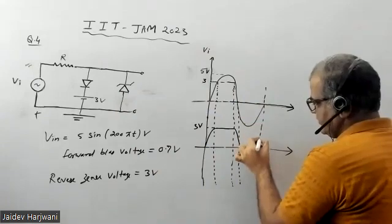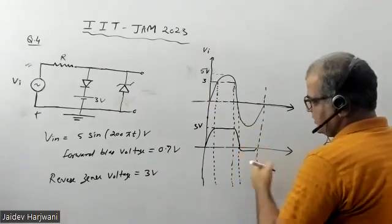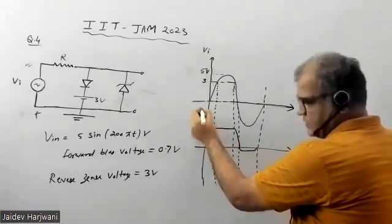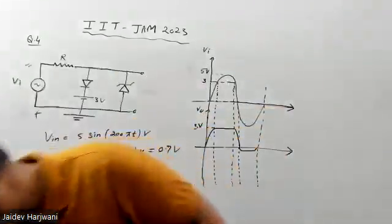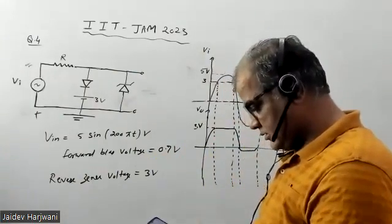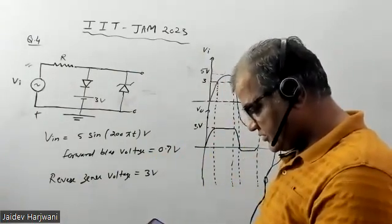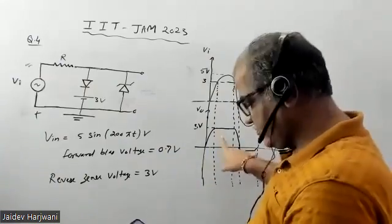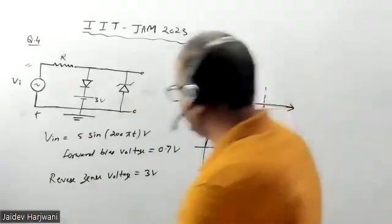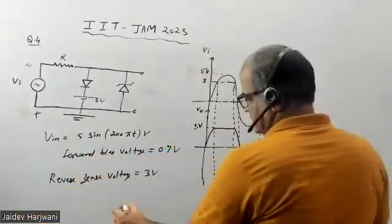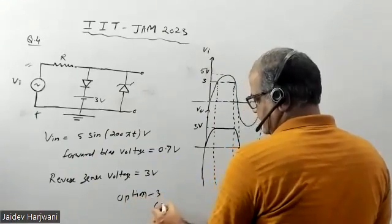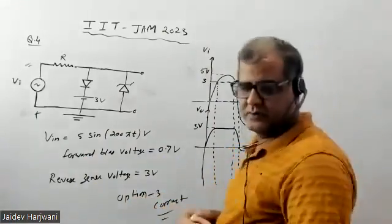So this is the output waveform. The output is clamped at +3 volts on the positive side and at -0.7 volts on the negative side. This corresponds to option C, which shows 3 volts on the positive half and 0.7 volts on the negative half. So option C is correct.